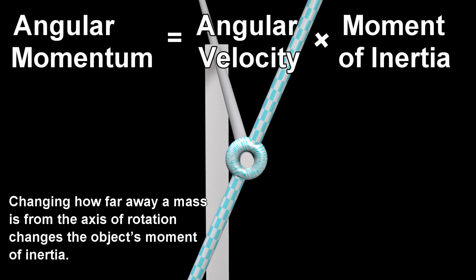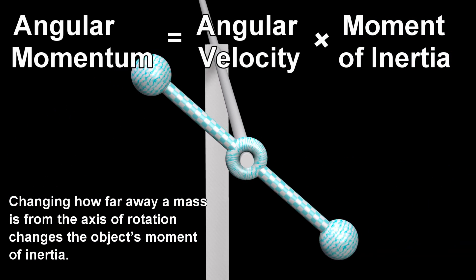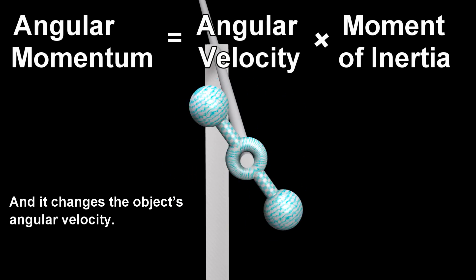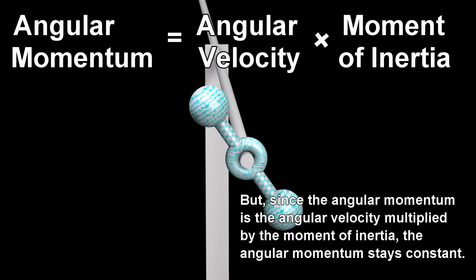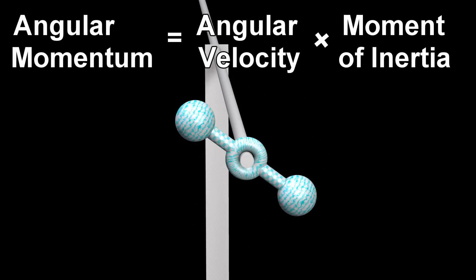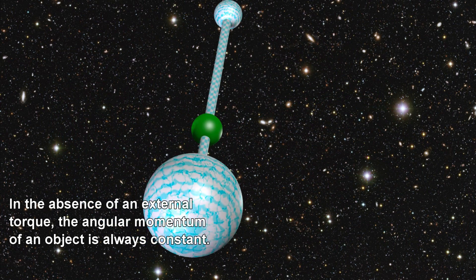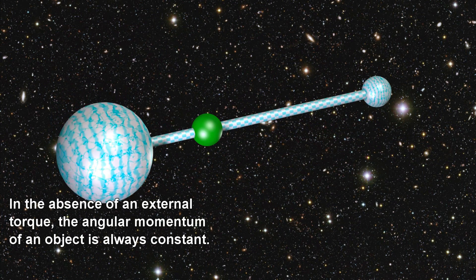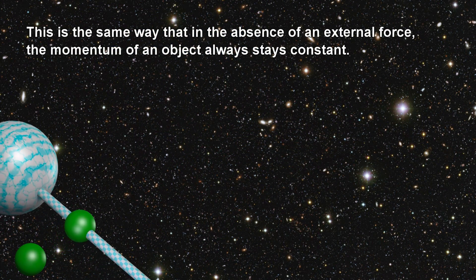Changing how far away a mass is from the axis of rotation changes the object's moment of inertia and also changes the object's angular velocity. But since the angular momentum is the angular velocity multiplied by the moment of inertia, the angular momentum stays constant. In the absence of an external torque, the angular momentum of an object is always constant. This is the same way that in the absence of an external force, the momentum of an object always stays constant.